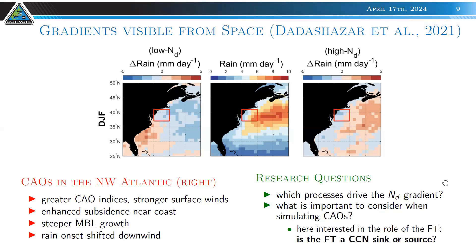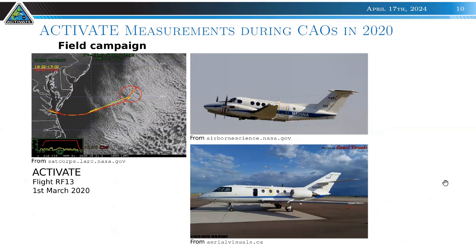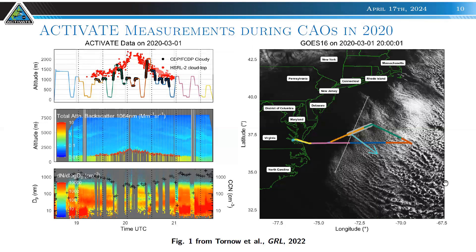To test this with field campaign data from ACTIVATE: the King Air aircraft was equipped with an HSRL-2, dropsondes, and the RSP instrument, flying at several kilometers altitude above the cloud deck. The Falcon aircraft was loaded with in-situ probes covering the full aerosol and cloud particle size range, plus trace gas measurements. Looking at a March 1st, 2020 case, the Falcon stepped through the atmosphere, and we can see the cloud deck increasing in height as we move away from shore.